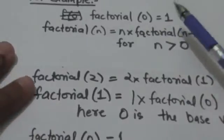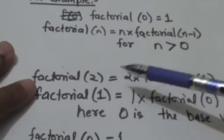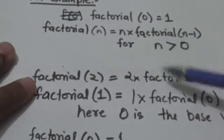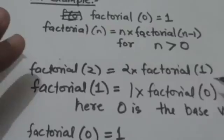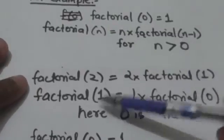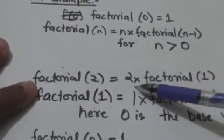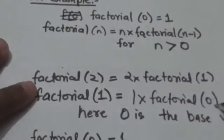For example, factorial(2) will be equal to 2 into factorial(1). Now we have to evaluate factorial(1), and factorial(1) is equal to 1 into factorial(0).